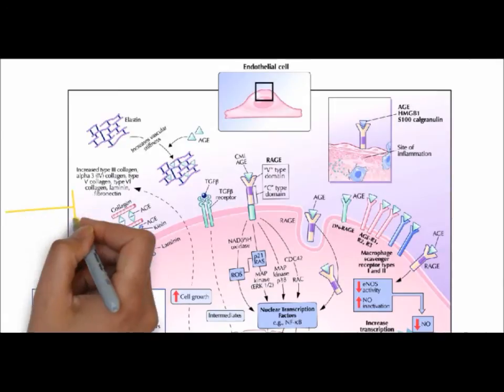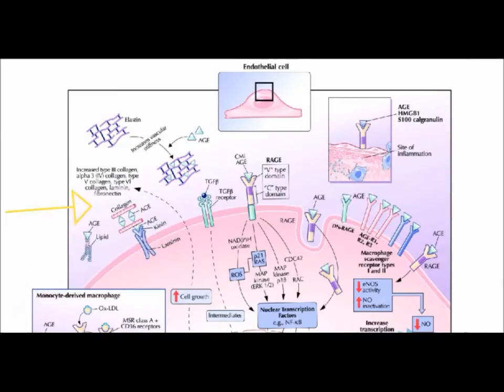One way is purely mechanical dysfunction caused by AGE cross-bridges among vessel wall macromolecules. Its accumulation can also cause circulating blood cells to adhere to the vessel wall. Non-mechanical sources of damage include the perturbation of cellular function through binding to a variety of receptors identified on various cell types, including macrophages, endothelial cells, smooth muscle cells, renal and neuronal cells.